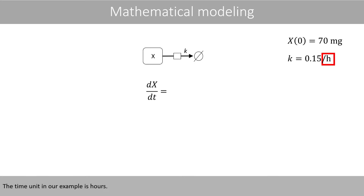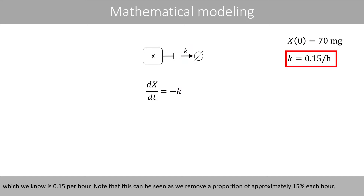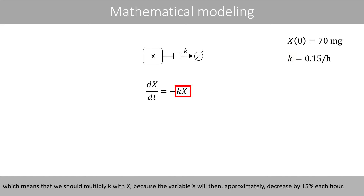The time unit in our example is hours. Since this arrow points away from compartment x, we first need a minus sign, because there should be a reduction in x. The speed of the reaction is determined by the parameter k, which we know is 0.15 per hour. Note that this can be seen as removing a proportion of approximately 15% per hour, which means that we should multiply k with x, because the variable x will then approximately decrease by 15% each hour.